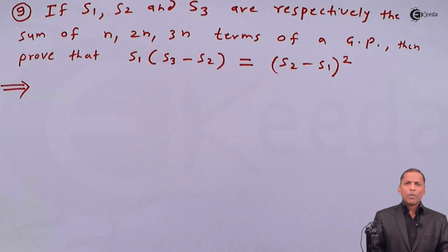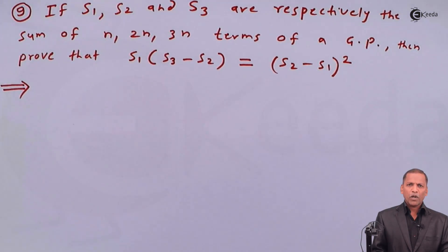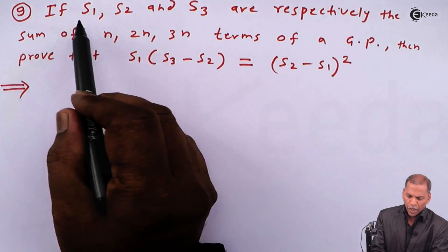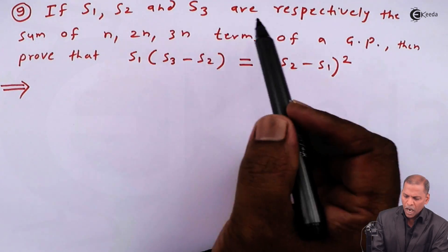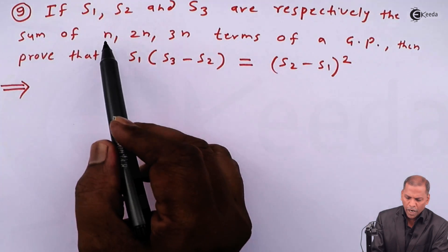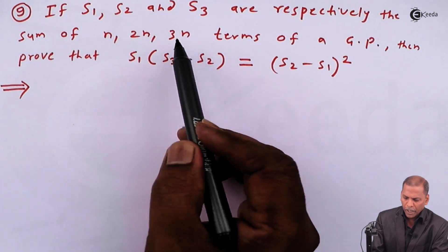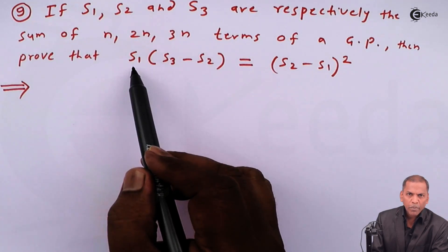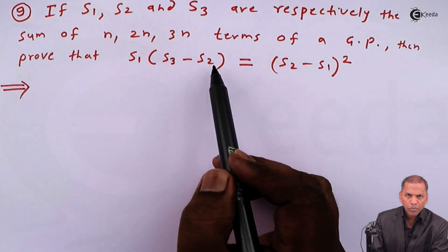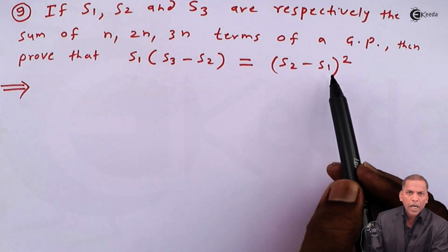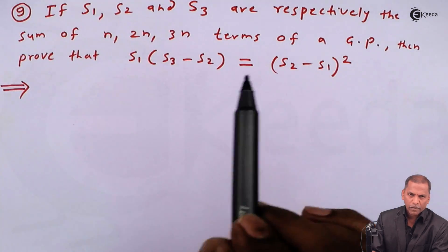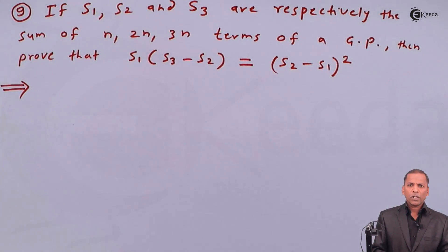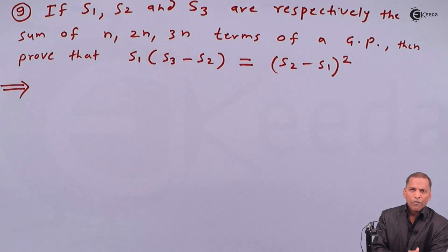Hello friends, now we see problem number nine, which is based on the sum of first n terms of a GP, from the chapter Sequence and Series. The question is: if S₁, S₂, and S₃ are respectively the sums of n, 2n, and 3n terms of a GP, then prove that S₁(S₃ - S₂) = (S₂ - S₁)².